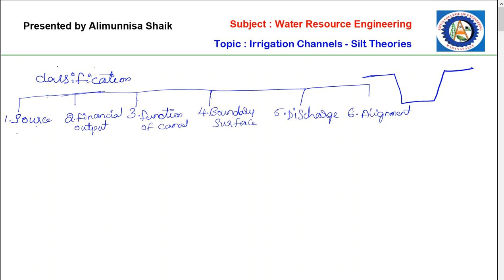The classifications of canals are generally subdivided into six categories: first, classification based on source; second, classification based on financial output; third, classification based on function of canals; fourth, classification based on boundary surfaces; fifth, classification based on discharge; and sixth, classification based on alignment.